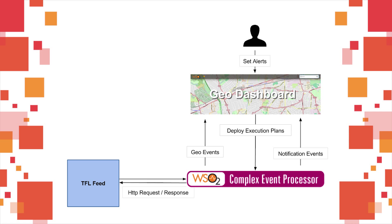When the given conditions occur, CEP will write to a WebSocket. The Dashboard will listen on this WebSocket, and when events arrive, they will be shown on the map.